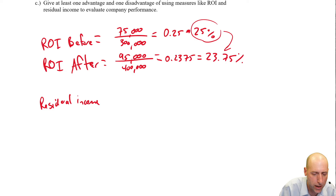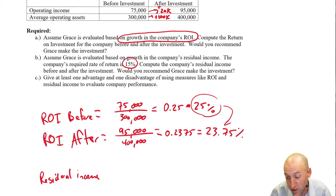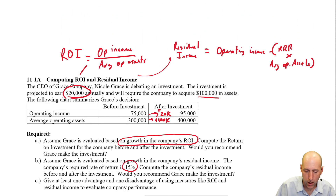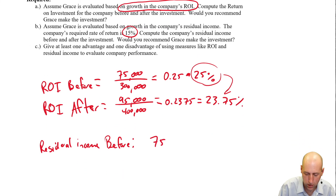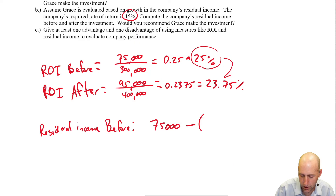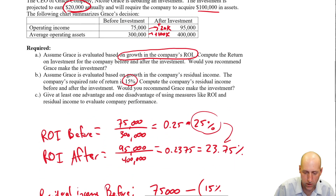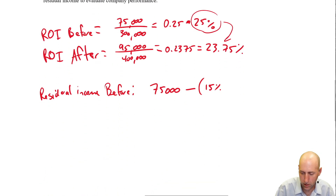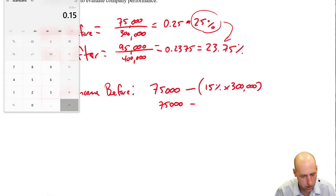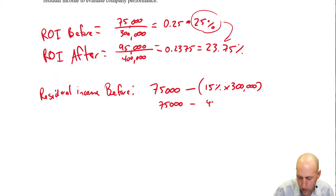For part B, Grace is evaluated based on growth in residual income, with a required rate of return of 15%. Residual income before: $75,000 minus (15% × $300,000). That's $75,000 minus $45,000, giving residual income before of $30,000.